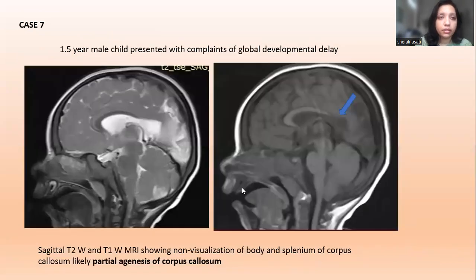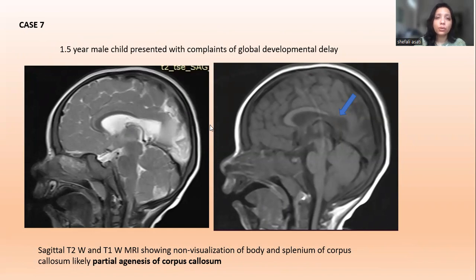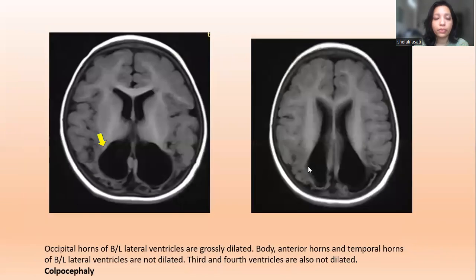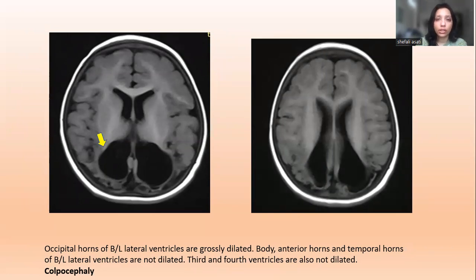Case 7: A 1.5-year-old male child presented with global developmental delay. On sagittal T2-weighted and T1-weighted sections, there is non-visualization of the body and splenium of the corpus callosum, likely partial agenesis of the corpus callosum. In the same patient, the occipital horns of the bilateral lateral ventricles were markedly dilated, while the anterior horns, body, temporal horns, and third and fourth ventricles were non-dilated — diagnosis of colpocephaly.